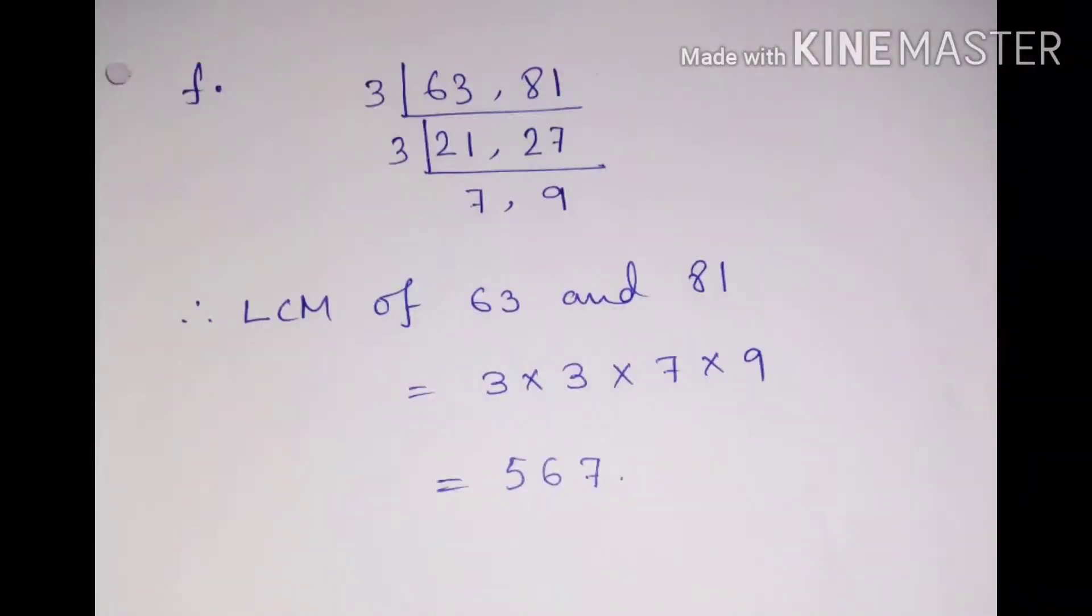Next we have done question number 3F, that is 63 and 81. You have to find out the LCM of 63 and 81. And here you can see that we have taken them together and done the repeated division.